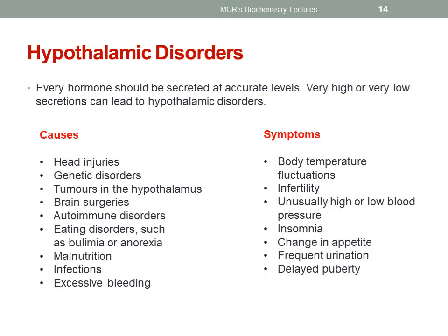Moving on to hypothalamic disorders. Every hormone should be secreted at accurate levels; very high or very low secretions can lead to hypothalamic disorders. The major causes include head injuries, genetic disorders, tumors in the hypothalamus, brain surgeries, autoimmune disorders, eating disorders, malnutrition, infections and excessive bleeding. The symptoms are body temperature fluctuations,